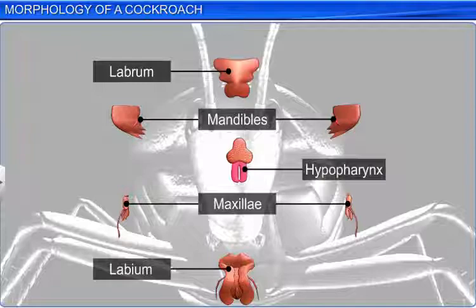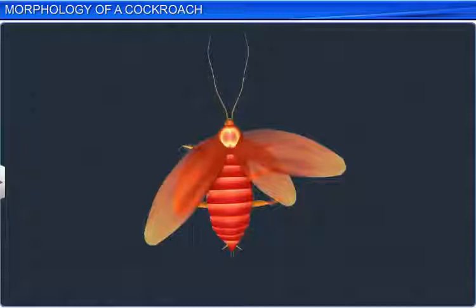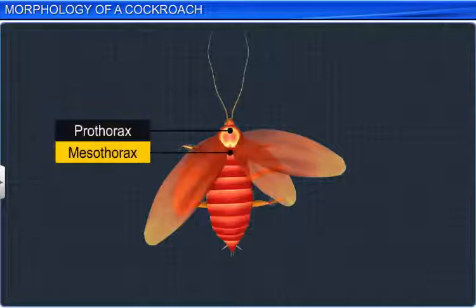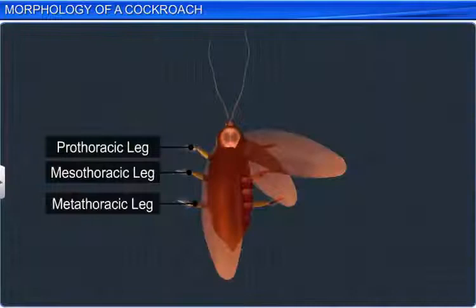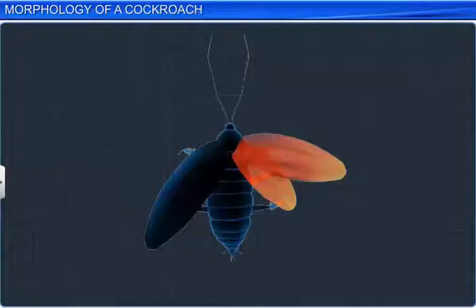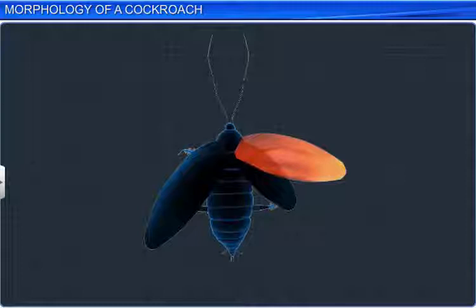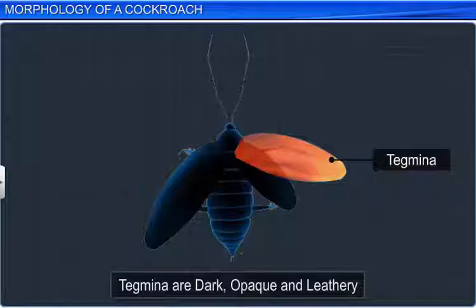Following the head is the thorax, which consists of three segments: prothorax, mesothorax, and metathorax. Each thoracic segment bears a pair of long, jointed legs. Moreover, the mesothorax and metathorax bear a pair of wings. The mesothoracic wings, or the forewings, are called tegmena. These wings are dark, opaque, and leathery, and cover the hind wings at rest. The hind wings are thin, transparent, and membranous, and are used in flight.